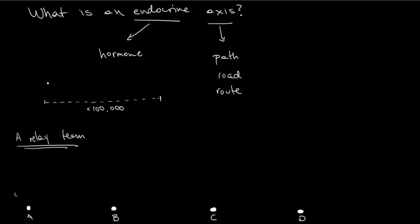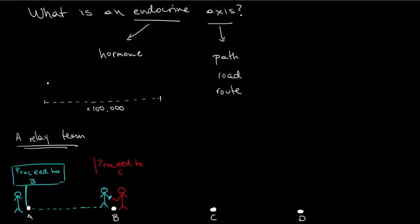So let's talk about our example here. We have the first runner, the first hormone, in blue. And the runner has instructions in the relay team to go from point A to B, to proceed to point B. Once they make it there, they're holding the button in their hand, so they're going to exchange that with, let's make a runner here in red, with the runner that has to go from point B to C. And that's the instructions that that hormone, that runner has, and so on and so forth.